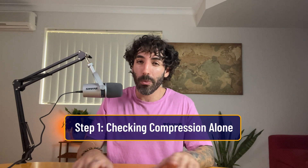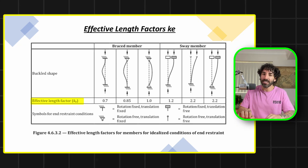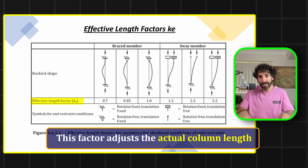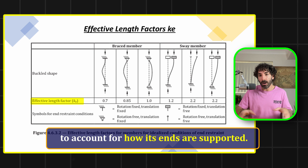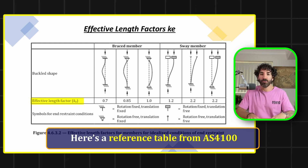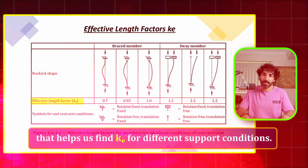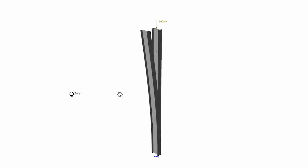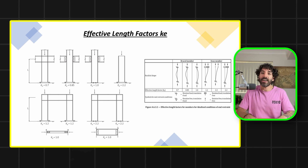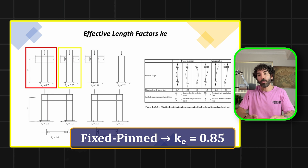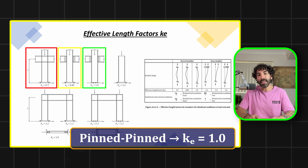Step one: checking compression alone. First, we need to determine the effective length factor KE. This factor adjusts the actual column length to account for how its ends are supported. AS4100 provides a reference table for different support conditions. For a braced member: fixed-fixed gives KE = 0.7, fixed-pin gives KE = 0.85, and pinned-pinned gives KE = 1.